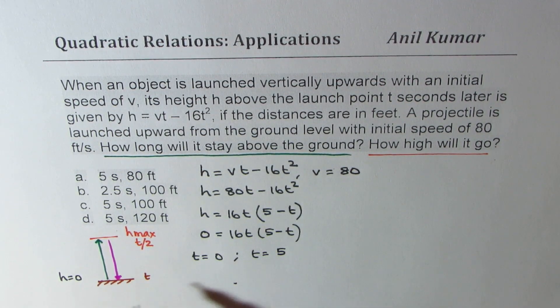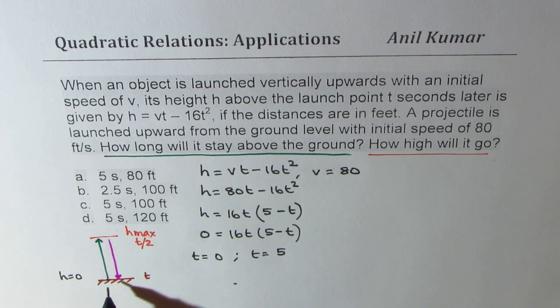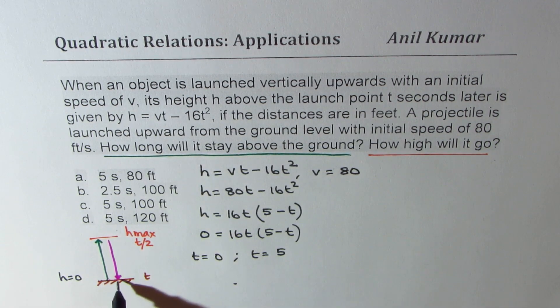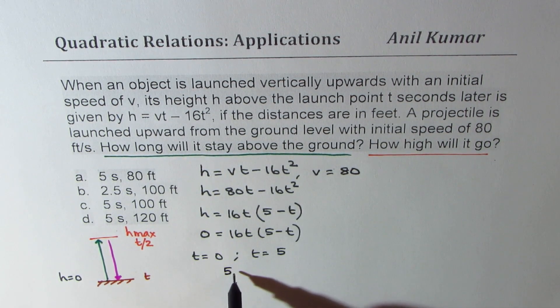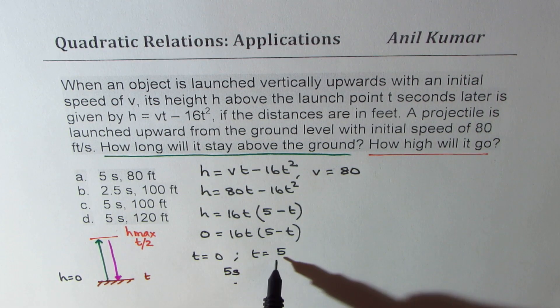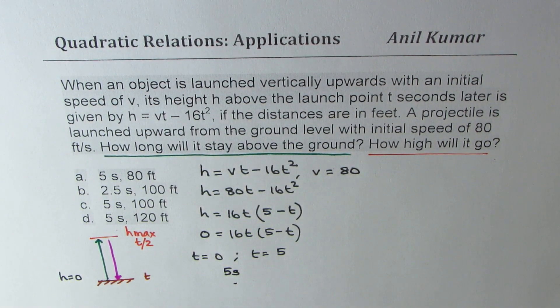So from here, initial point t = 0, we start, t = 5, it hits back. And therefore, we get one of the answers which is 5 seconds. So for 5 seconds, the object is in the air. Perfect. So we get one of those solutions.